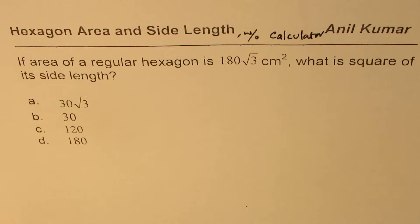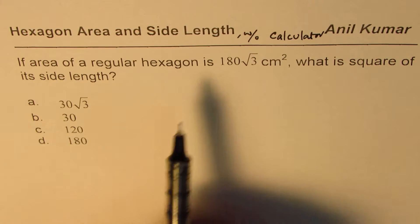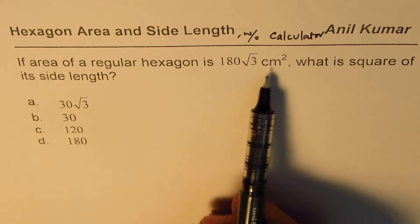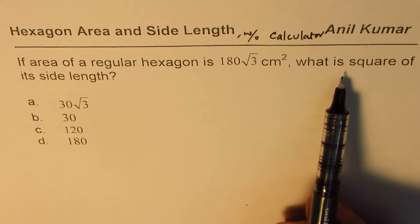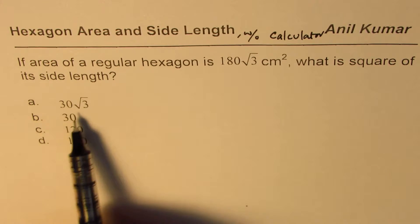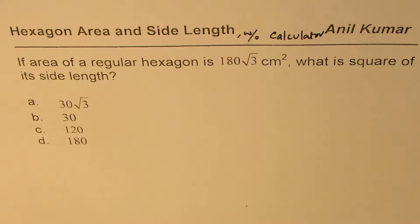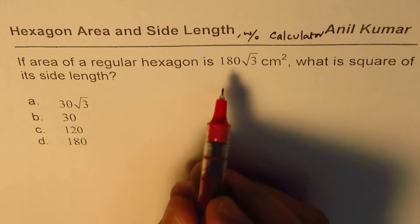The question here is: if area of a regular hexagon is 180 square root 3 centimeter square, what is square of its side length? Four options are given to you. So let's try to understand the question and then we'll solve this in around a minute.